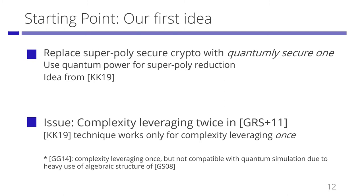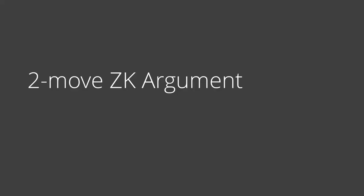You might think we can apply the technique by Kretschmer and Krane to the protocol by Garg and Gupta, since they use complexity leveraging only once. However, all building blocks of their protocol must be pairing-based, since they use specific algebraic properties of the Groth-Sahai proof system. So the protocol is not compatible with quantum simulation. We saw that the two-move zero-knowledge argument is a crucial building block, so we focus on this primitive hereafter.